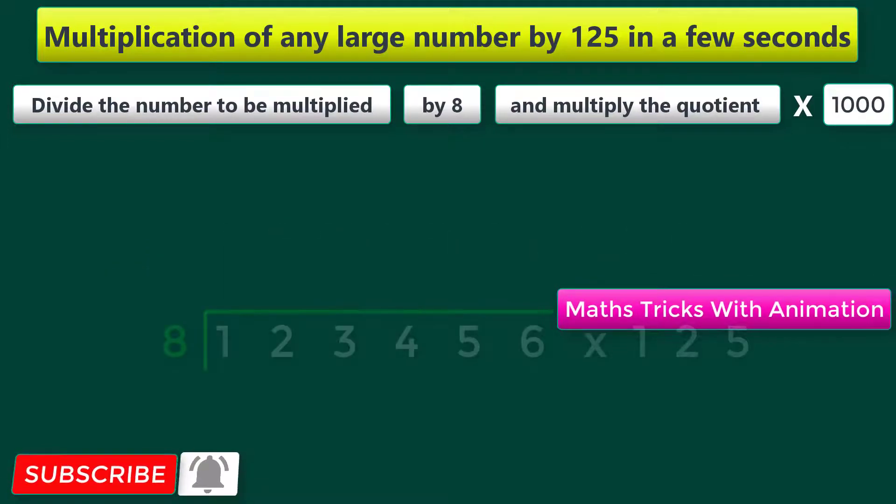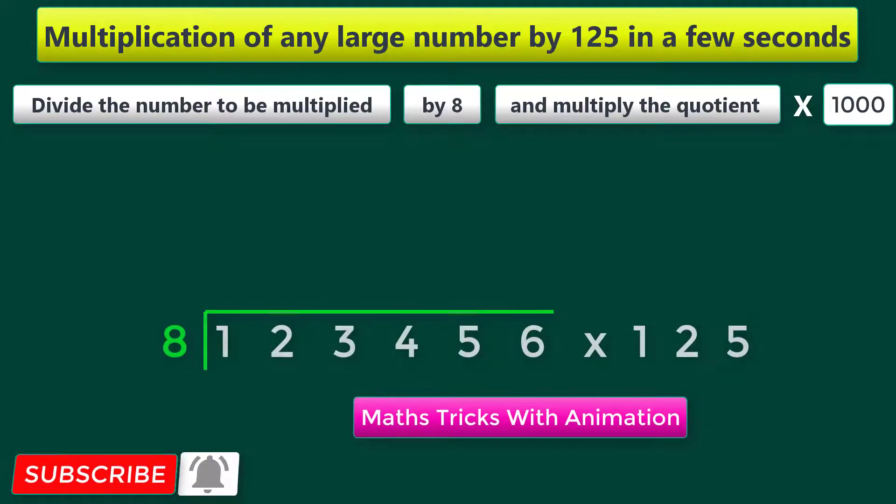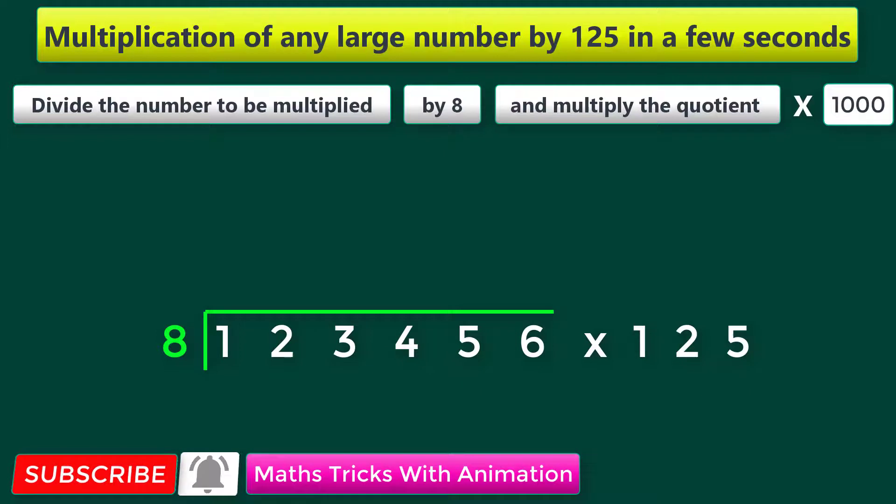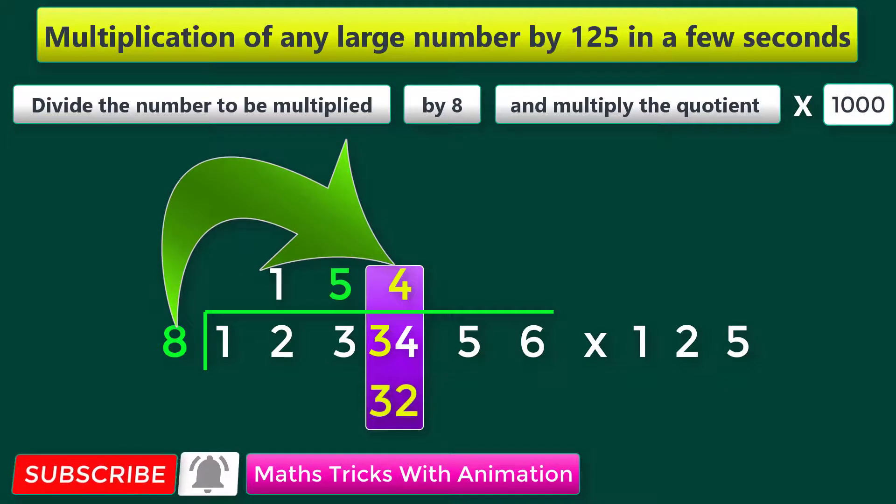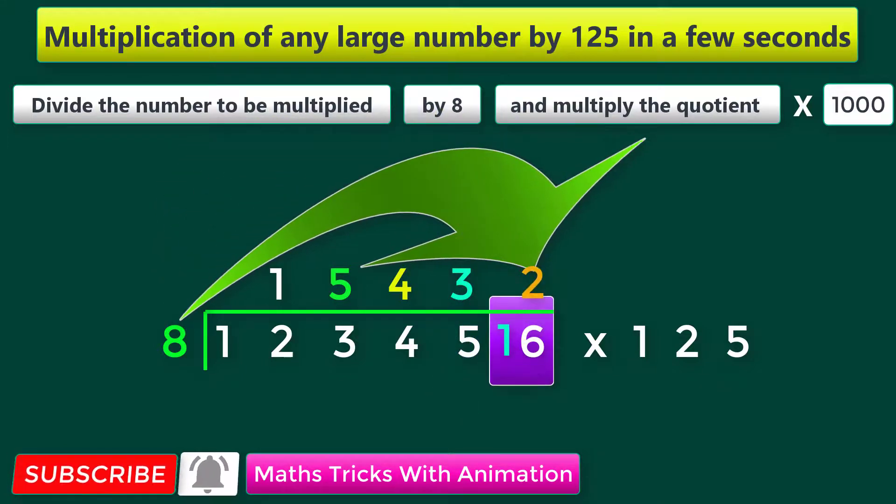For the last example, let us multiply the number 1 lakh 23,456 by 125 in a few seconds. 8 ones are 8, remaining 4 aside. 8 fives are 40, remaining 3 aside. 8 fours are 32, remaining 2 aside. 8 threes are 24, remaining 1 aside. 8 twos are 16.